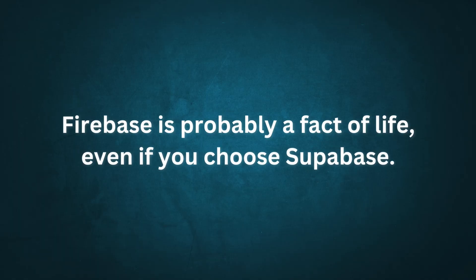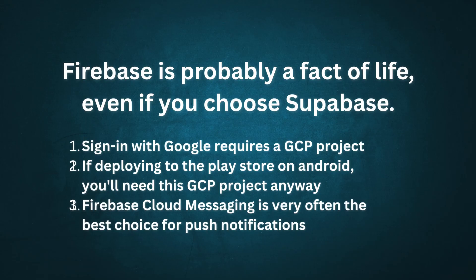It's not a super simple choice. But let's turn specifically to FlutterFlow and go through some of the gotchas you should know about before you make your choice. Firebase is probably a fact of life even if you choose Supabase. This is because sign-in with Google requires a GCP project, which is easiest to set up using Firebase. If you're deploying to the Google Play Store, you need a GCP project anyway. And Firebase Cloud Messaging is often the best choice for push notifications, which Supabase doesn't have. You can choose not to have sign-in with Google, not deploy on Android, and use something like OneSignal for push notifications. But not having a Firebase or GCP project at all is only going to be a tiny fraction of FlutterFlow users. Even with other tools like BuildShip, you'll almost always end up with a GCP project. So my view is that if Firebase or GCP is basically forced upon you, you might as well embrace it and centralize your stack. That doesn't mean don't use Supabase — I'm just saying avoiding Firebase is not a reason in and of itself to use Supabase.